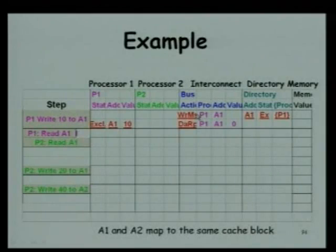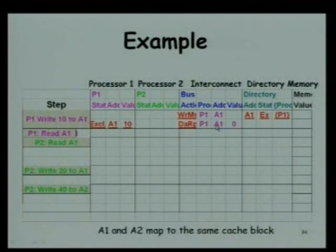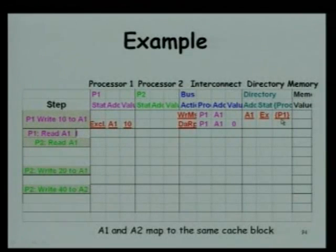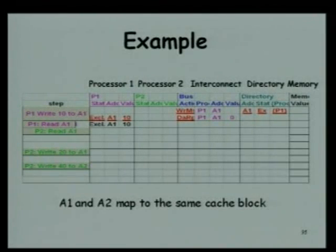Now let us say P1 wants to read A1. Since it is already having it in exclusive state, the local controller does not request the memory — it simply reads locally.